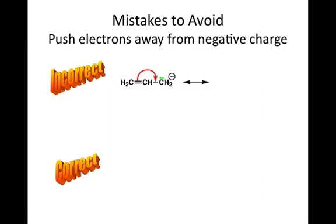Another mistake that we see often is you want to push your electrons away from a negative charge. A negative charge is a surplus of electrons. That's an electron-rich area of the molecule. Therefore, we don't want to push electrons towards an electron-rich area. That makes it even more negative. So we don't want to create a negative two charge on any part of a molecule.